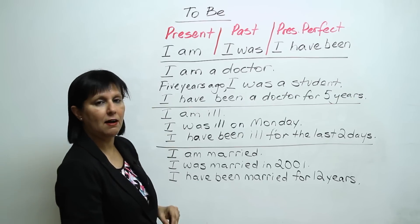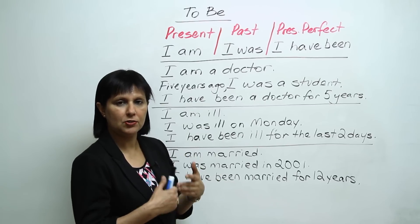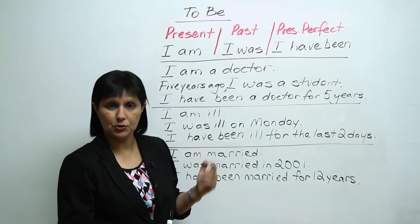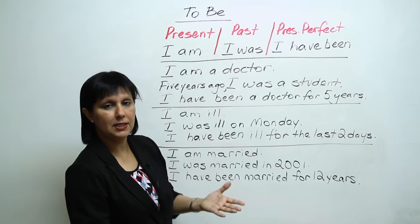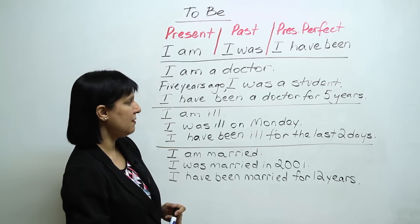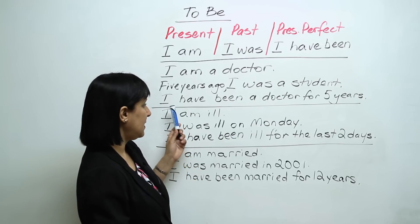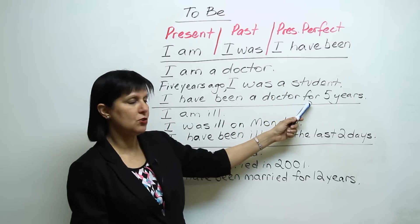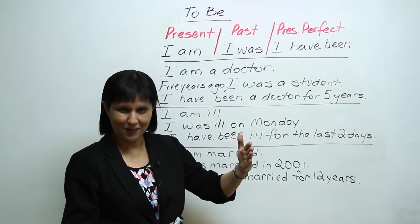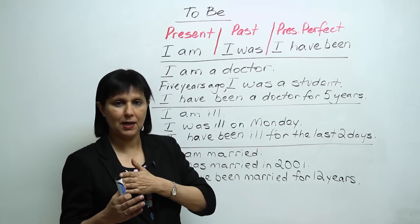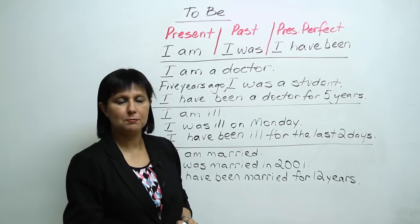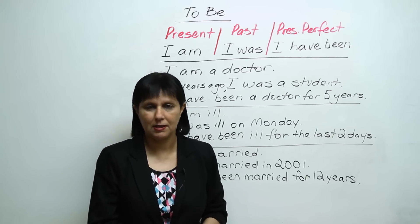Let's see how this works with examples. 'I am a doctor' means he or she is a doctor now. 'Five years ago, I was a medical student' — clearly in the past, finished and over. 'I have been a doctor for five years' — present perfect — means the person started being a doctor five years ago and continues now. So 'I have been a doctor for five years' includes the past as well as the present. You can see how using present, past, or present perfect allows us to communicate different kinds of information.